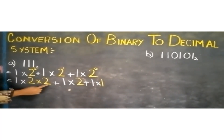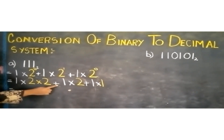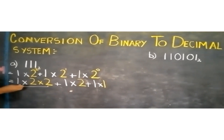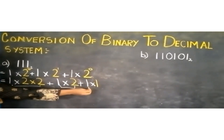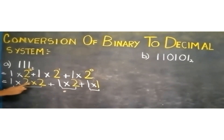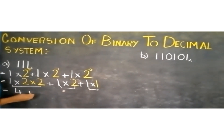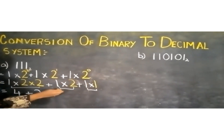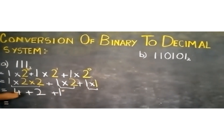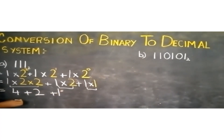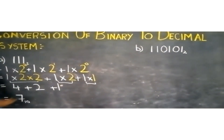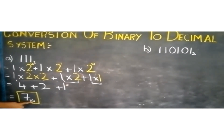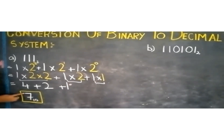Now we have two operations: multiplication and addition. We solve multiplication first. 1 multiplied by 2 is 2, 2 multiplied by 2 is 4, plus 1 multiplied by 2 is 2, plus 1 multiplied by 1 is 1. Then 4 plus 2 is 6, and 6 plus 1 is 7. Our topic was to convert the binary number into base 10, so 7 is the decimal number.